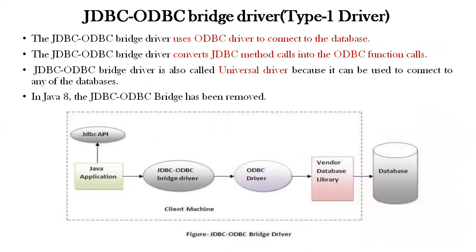The first driver is Type 1 driver, the JDBC-ODBC bridge driver. The JDBC-ODBC bridge driver uses an ODBC driver to connect the database. The JDBC-ODBC bridge driver converts JDBC method calls into ODBC function calls. The JDBC-ODBC bridge driver is also called a universal driver because it can be used to connect any type of database. In Java 8, the JDBC-ODBC bridge has been removed.